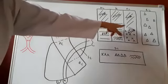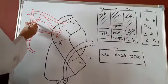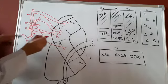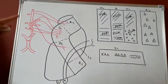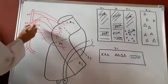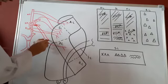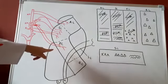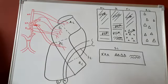Talking about the posterior limb, it is supplied by the middle cerebral artery and the anterior choroidal artery. You draw the middle cerebral artery branch and the anterior choroidal artery branch supplying the posterior limb. Thus it is clear from the diagram that the posterior limb is supplied by the anterior choroidal artery and the middle cerebral artery.